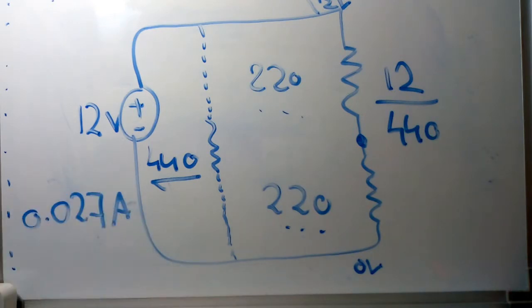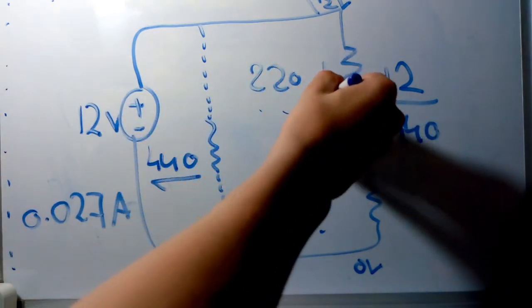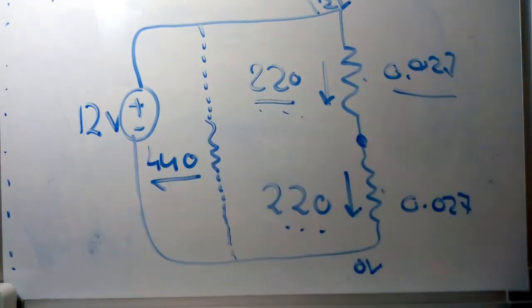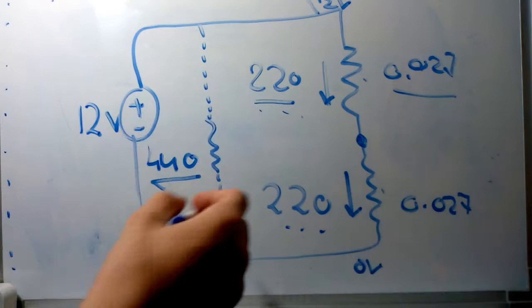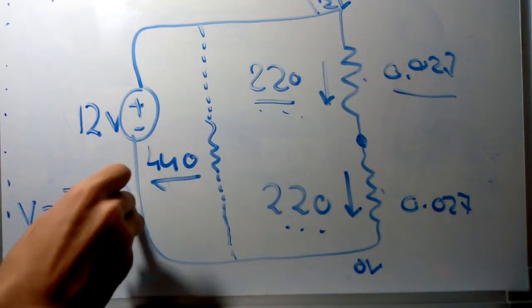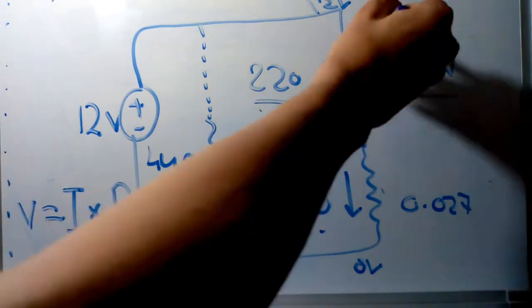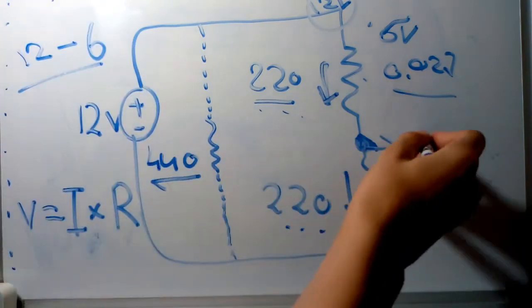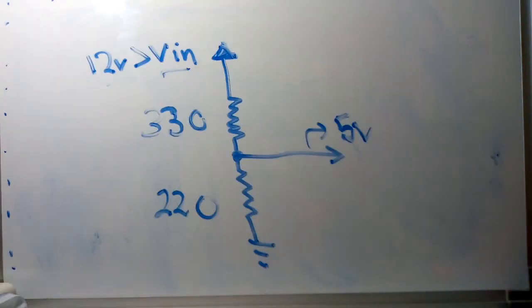The current through the two resistors will be the same. We now have the current through the resistor and the resistance, so we can easily calculate the voltage, which is the current times the resistance, equaling around 6 volts. This is the voltage dropped by the resistor. To calculate the voltage at this point, we subtract that 6 volts from the 12 volt source, resulting in 6 volts.